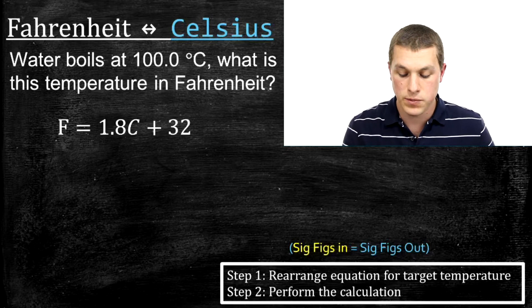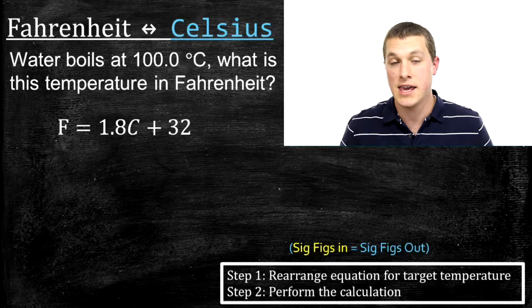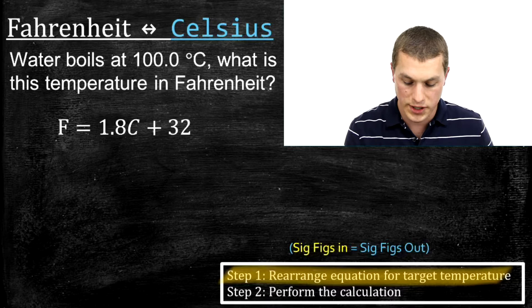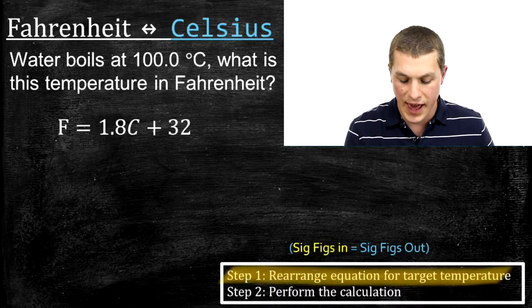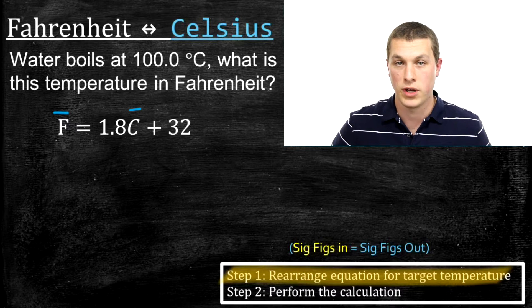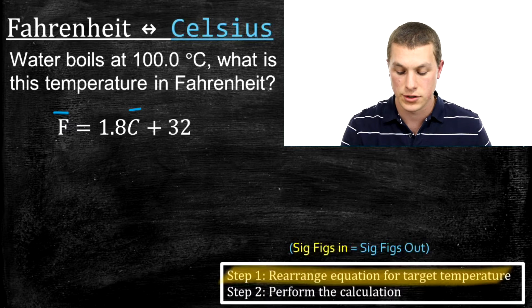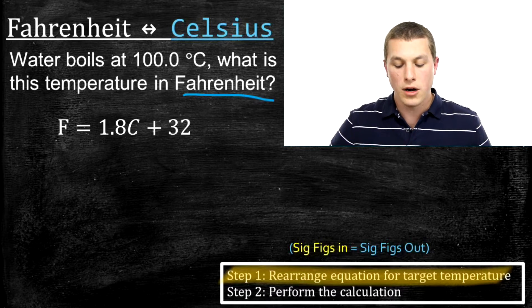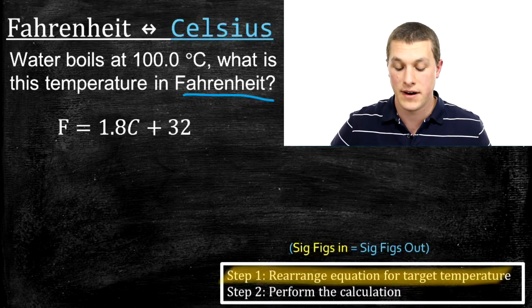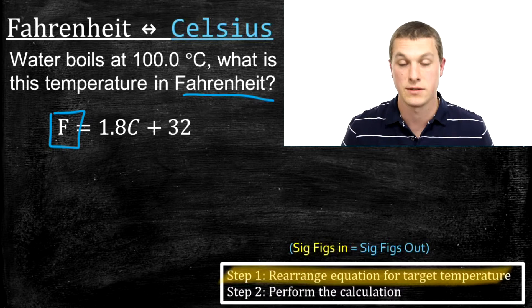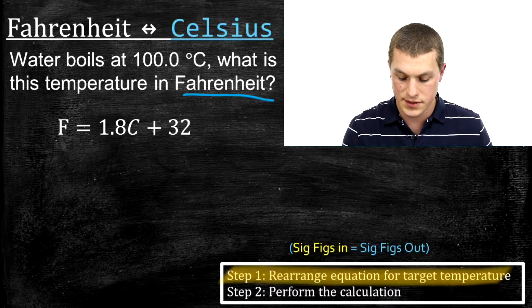Going between Fahrenheit and Celsius is broken down into two steps using algebra. Step one says rearrange the equation for the target temperature. The equation reads: F equals 1.8 times C plus 32, where F is temperature in Fahrenheit and C is temperature in Celsius. Our question asks: water boils at 100 degrees Celsius — what is this temperature in Fahrenheit? Since our target is Fahrenheit and the equation is already solved for F, step one is already done.